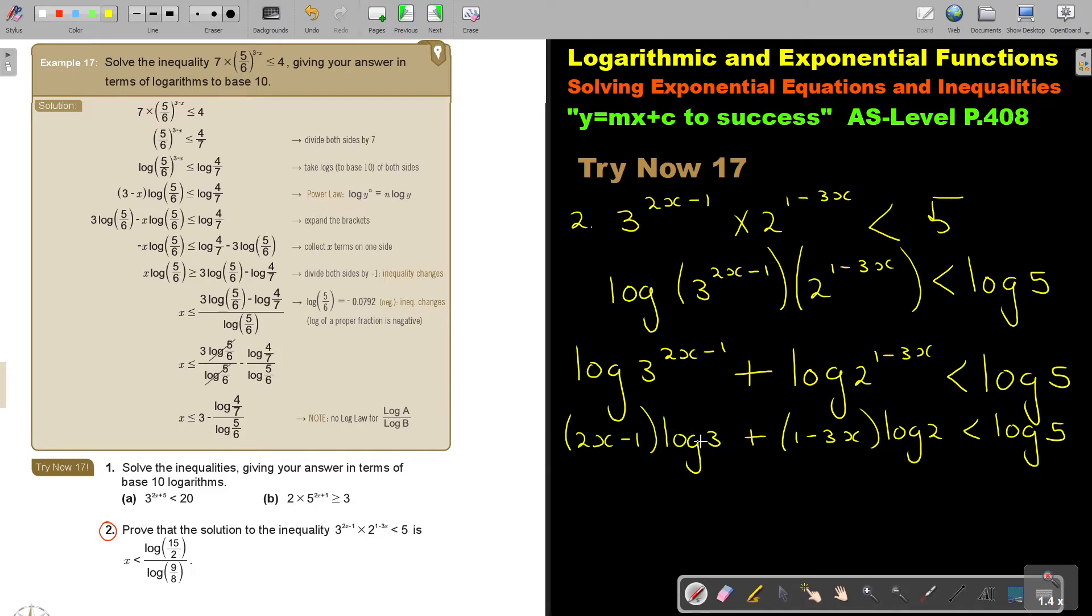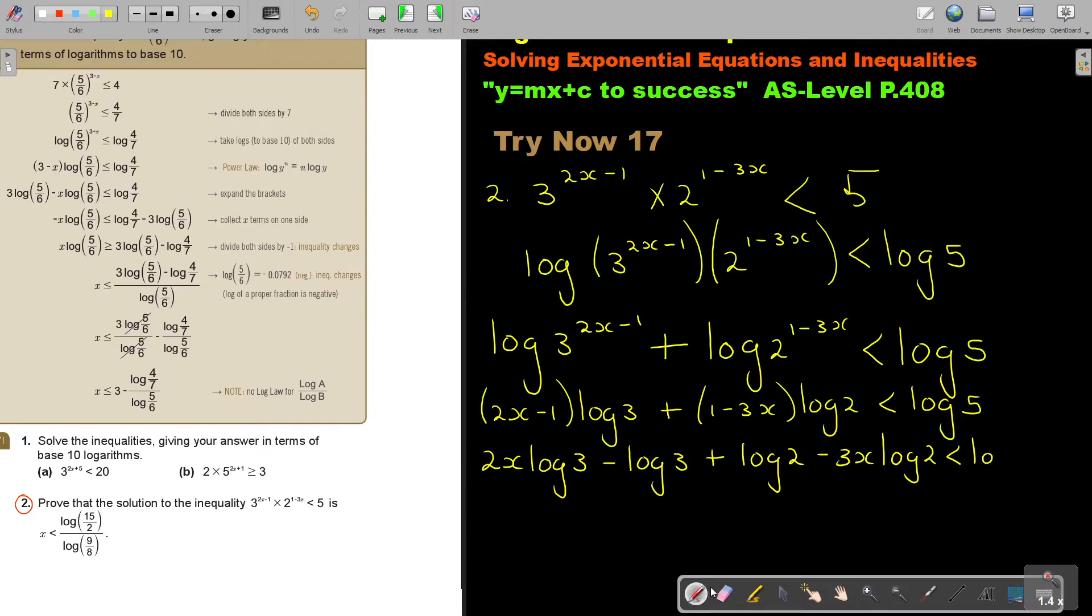Because it's in front, you can multiply. So it's 2x log 3 minus log 3 plus log 2 minus 3x log 2, smaller than log 5.